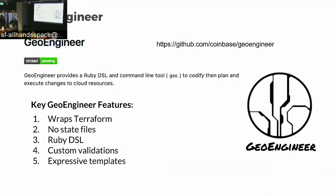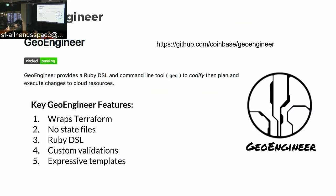Geoengineer is an open source project — you can find it at github.com/Coinbase/Geoengineer and use it today. It's a Ruby DSL that allows you to codify, plan, and execute changes to cloud resources. Key features: it wraps Terraform, there are no state files — no state at all other than what actually exists in your cloud. Being a Ruby DSL means you can have conditionals, loops, anything you like in Ruby. It allows custom validations, and lets you build expressive templates beyond what Terraform modules provide.